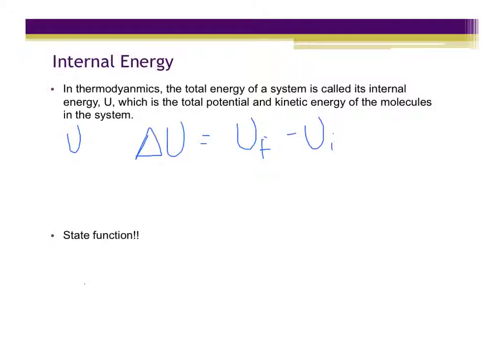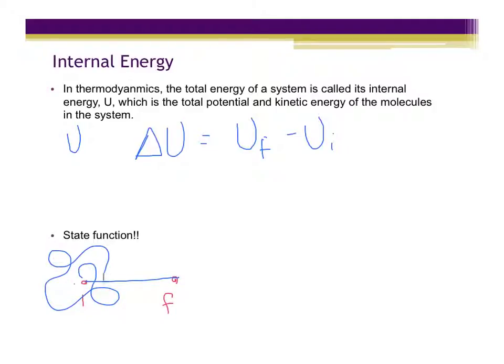Internal energy is a state function — if we go from an initial state to a final state, it does not matter how we get there. We can go straight there or take a detour all around the world. As long as we end up going from the initial state to the final state, it does not matter how you get there. For example, going from campus to Sonic — it doesn't matter whether you go down the back road, take Highway 61, or take the natural straights. All that matters is that you get from campus to Sonic. That is the definition of the state function.